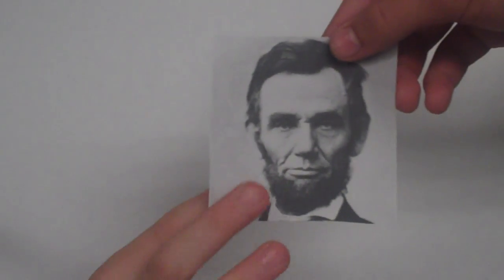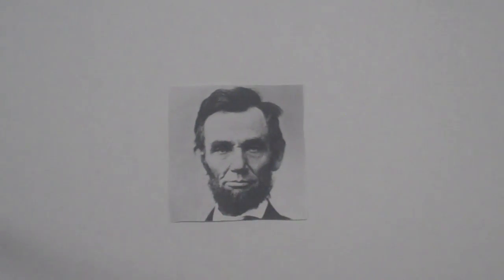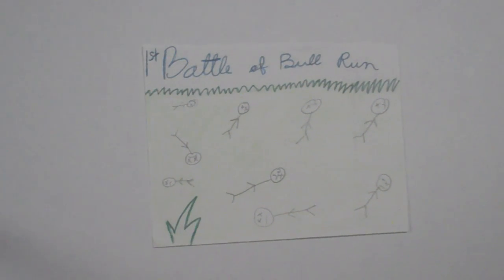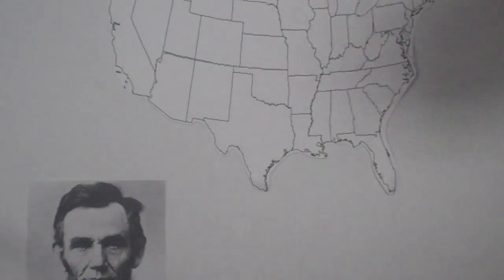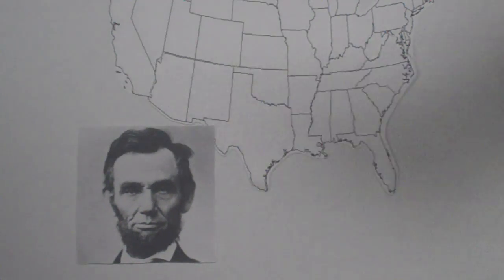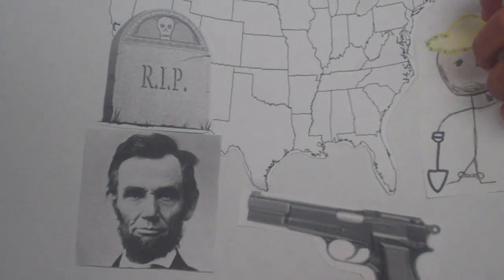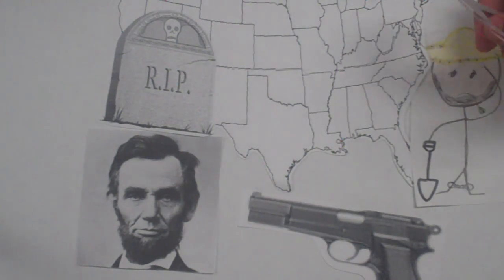The Civil War did become the bloodiest war in American history, with between 600,000 and 700,000 casualties. Eventually, the North won and the South was forced back into the Union. Slavery was abolished. Lincoln was assassinated five days after the war ended. The war did end slavery in the U.S. and brought the country back together, and it also stopped states from seceding at will.